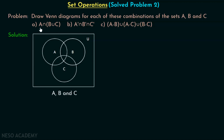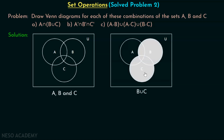Now, we want to draw the Venn diagram for A intersection B union C. First, we will draw the Venn diagram for B union C, then we will draw the Venn diagram for A intersection B union C. B union C means everything of B and C must be included — either B or C or both. This area is common between B and C and must be included, as well as the area that is only B and the area that is only C. This shaded region represents B union C.